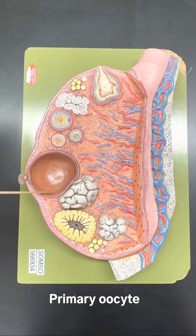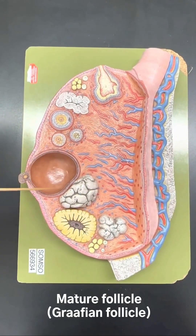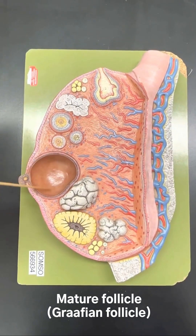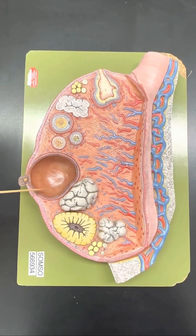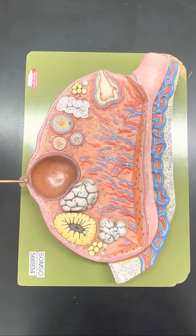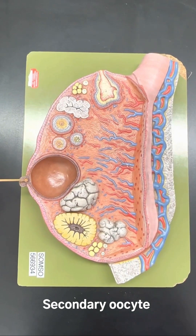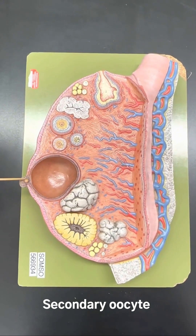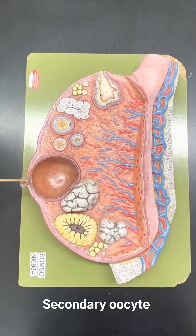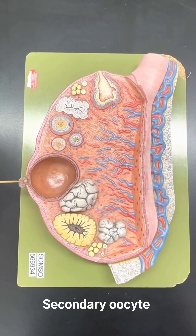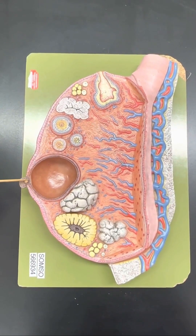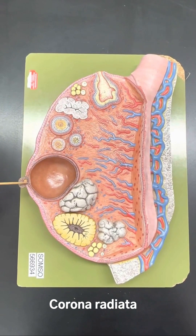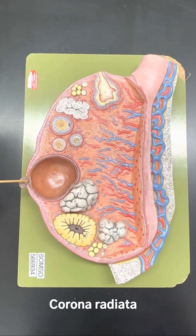Next we have the mature follicle, or the Graafian follicle. We notice there is a secondary oocyte in the mature follicle. And just around it there is the corona radiata.